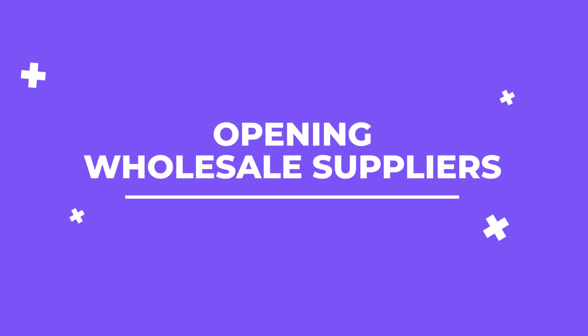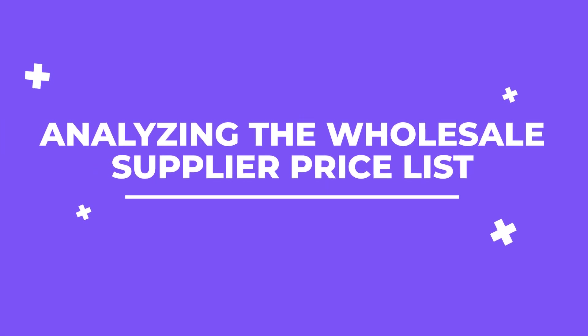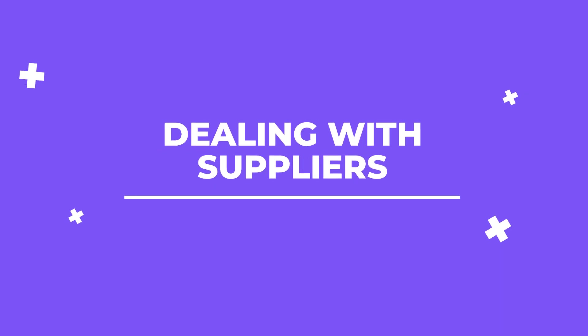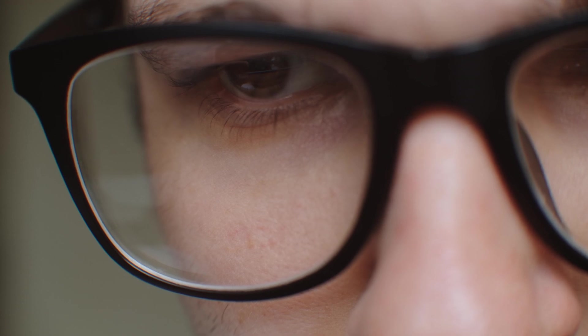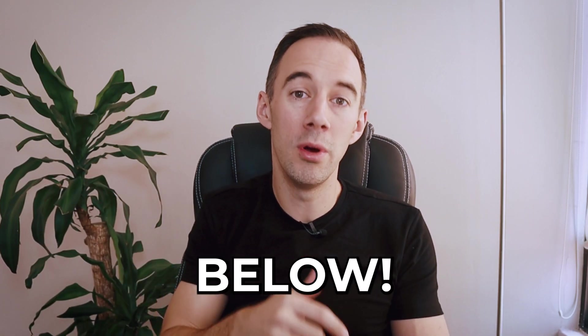If you think about the wholesale process for a moment, there are generally three parts. Opening wholesale suppliers — I usually do this myself, and there are many videos on YouTube about it, so I'm not going to cover it today. The second part is going to be analyzing the wholesale supplier price list — this is probably why you're watching this video, it takes the most amount of time, and we're going to focus on that today. The third part is dealing with suppliers: checking the prices or deals, negotiating, buying, and even reordering.